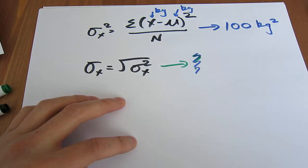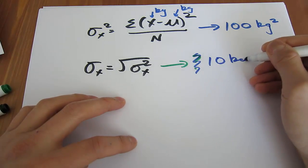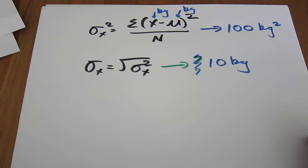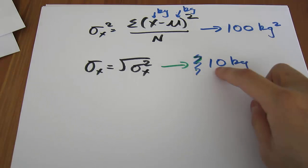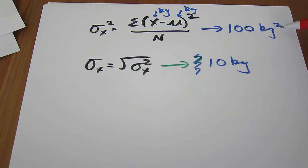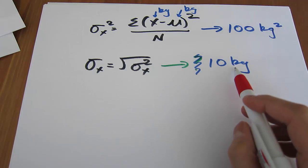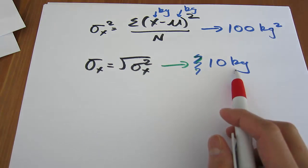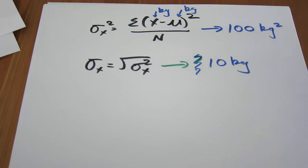So because we've taken the square root, 100 becomes 10, and kilograms squared becomes kilograms. Now we're dealing with the original unit that we were measuring in, and this is a unit that we're familiar with.